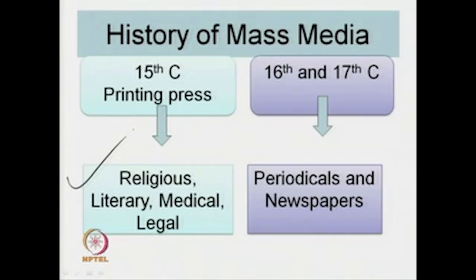Moving to the 16th and 17th centuries, the printing press further produced periodicals and newspapers. There were no newspapers really before this time. Newspapers and periodicals are media forms added to the hitherto existing books and pamphlets. The revolution really began with the printing press, and in the 17th and 18th centuries, periodicals and newspapers were added to existing media forms.